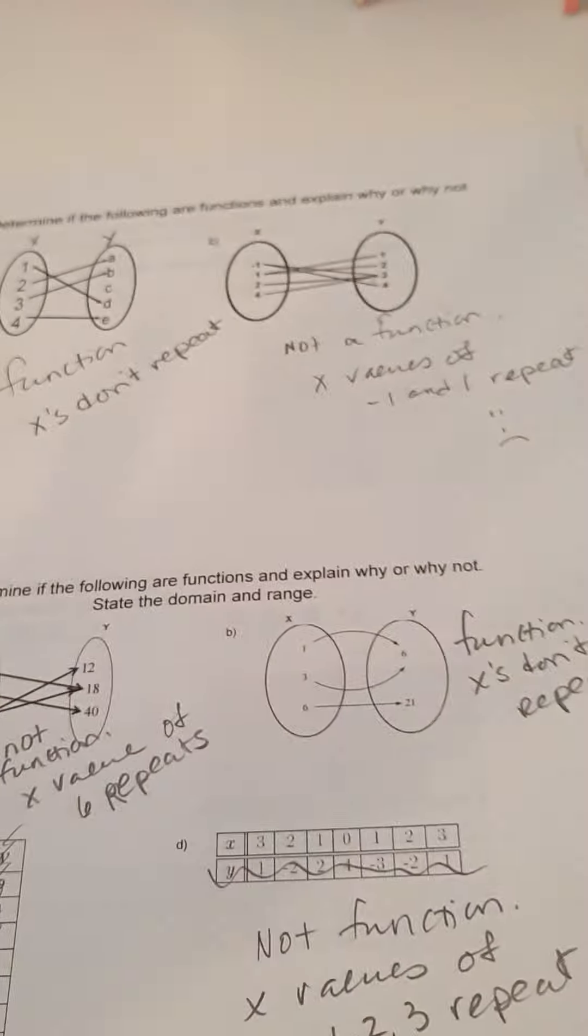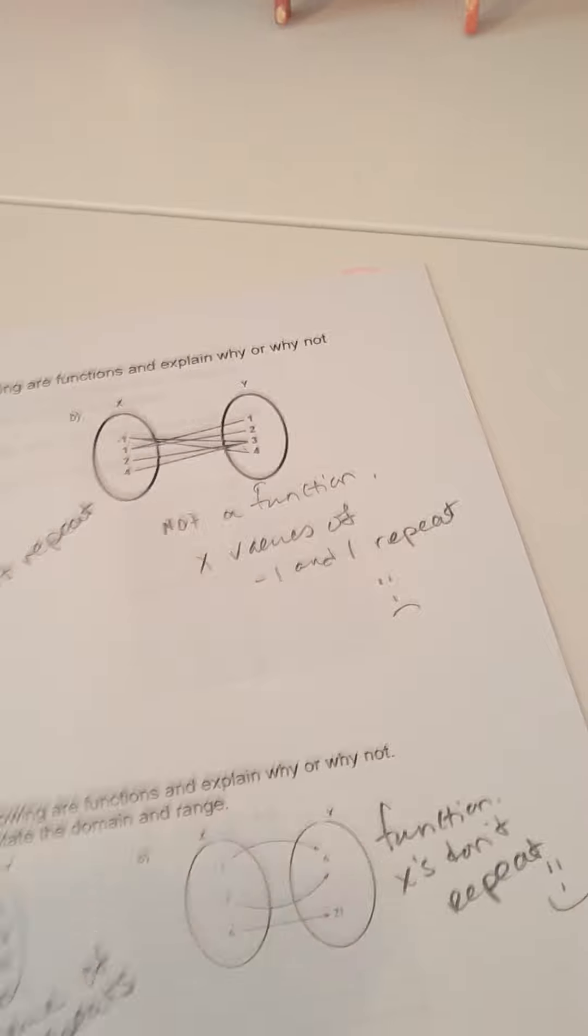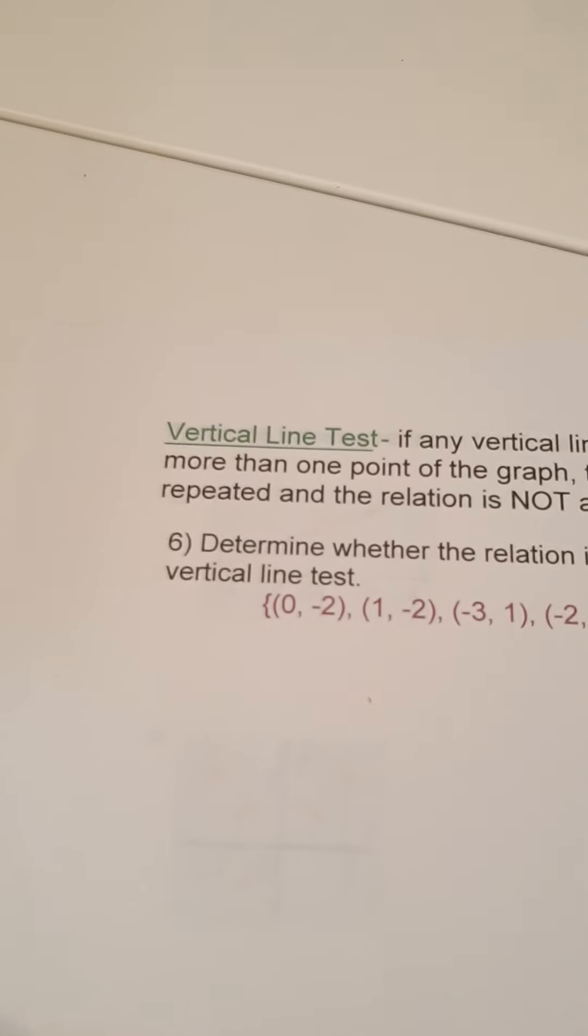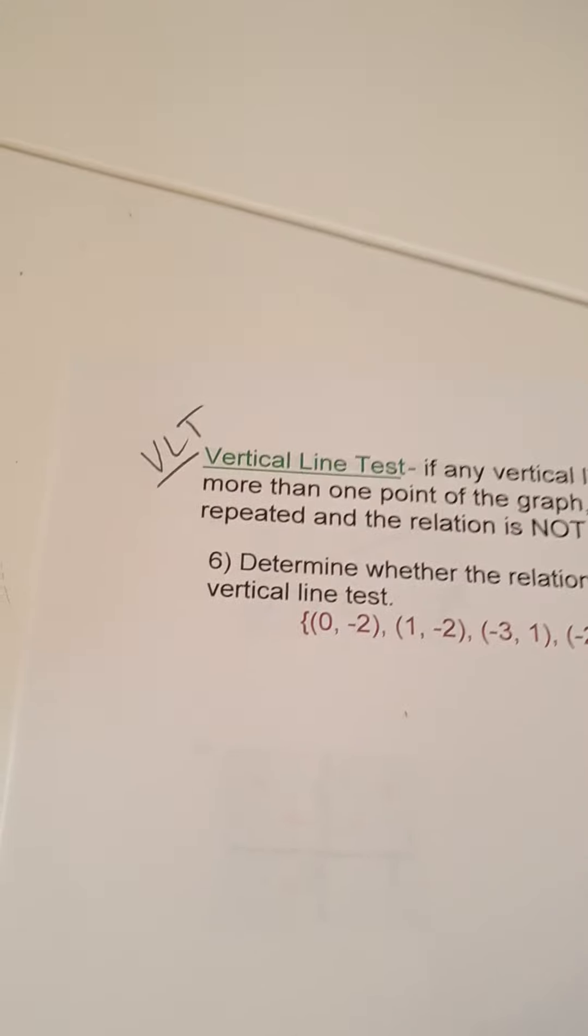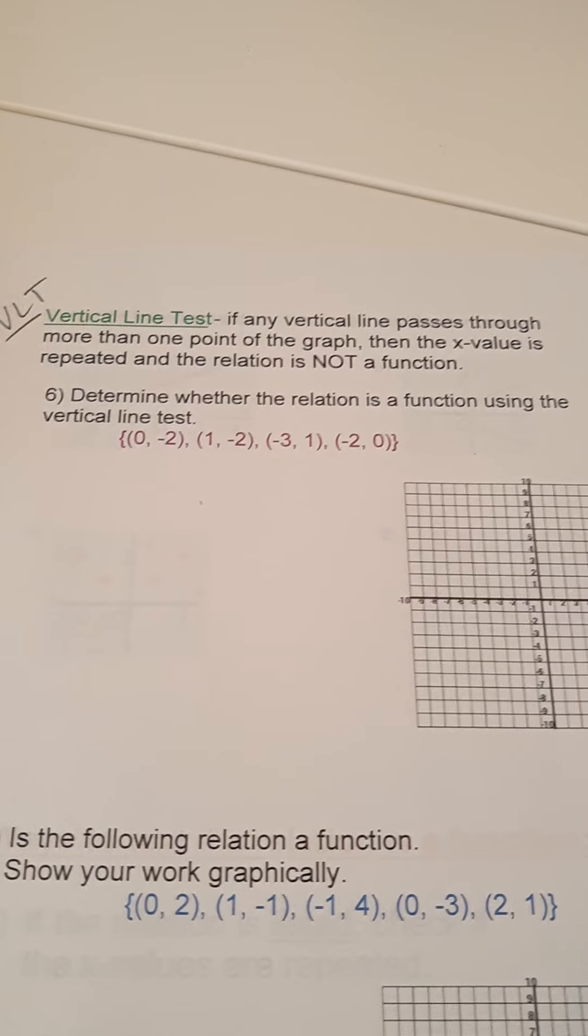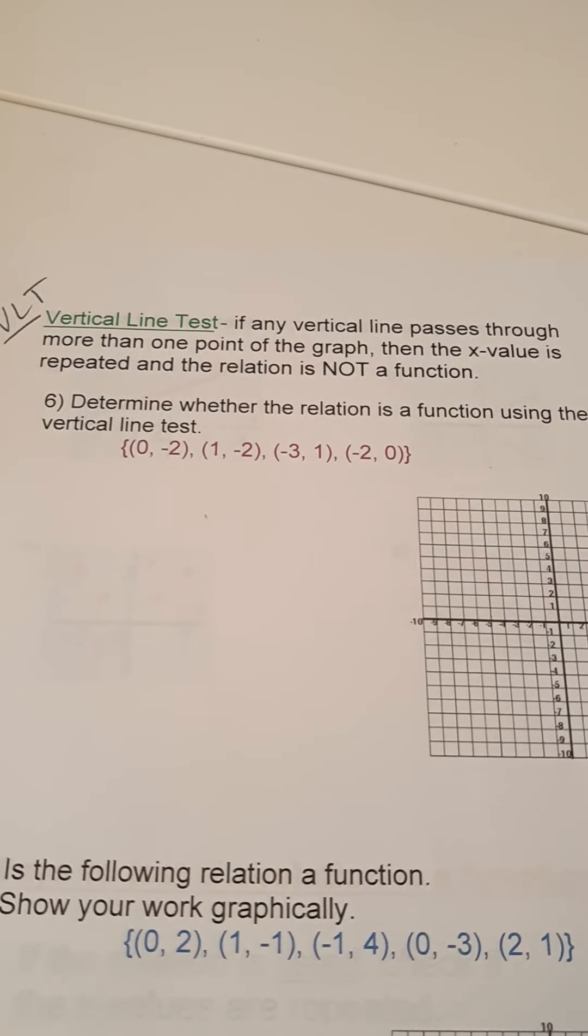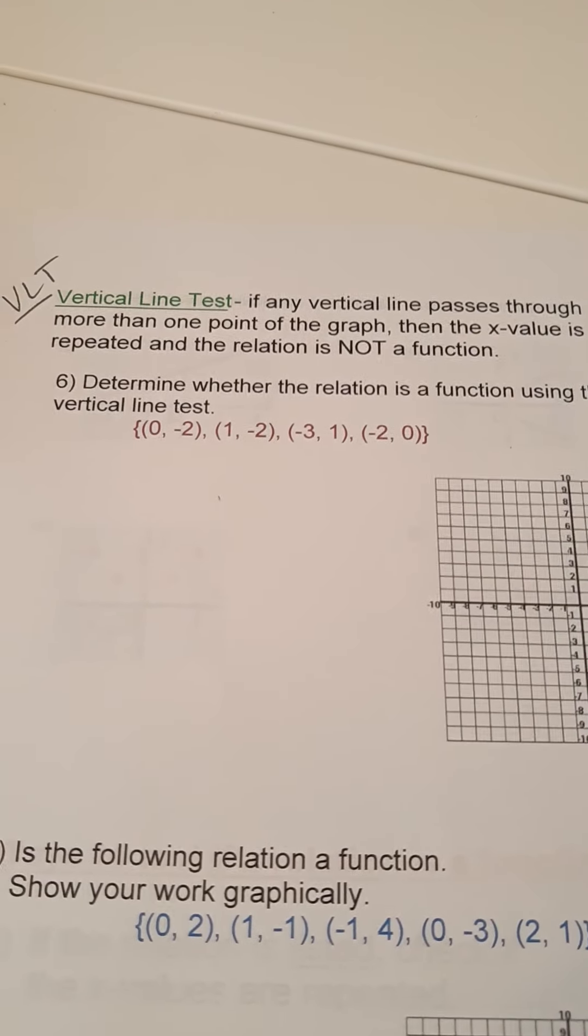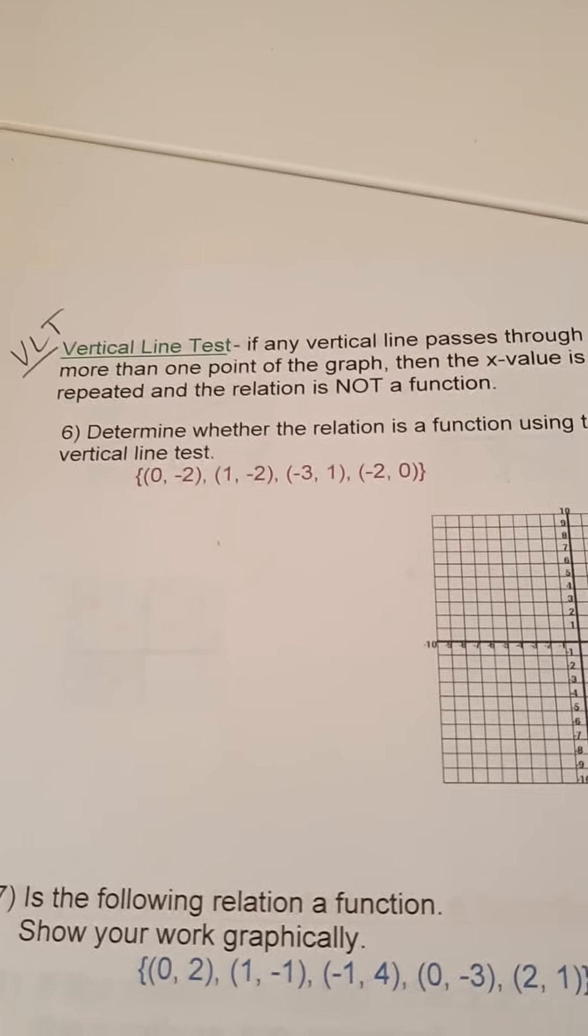All right. So, we've done some mapping diagrams. We've done some ordered pairs. We've done some t-charts. We're moving on to the vertical line test. It is abbreviated as the VLT. So, what it says. If a vertical line passes through more than one point of the graph, then the x value is repeated and the relation is not a function. So, keep that in mind.